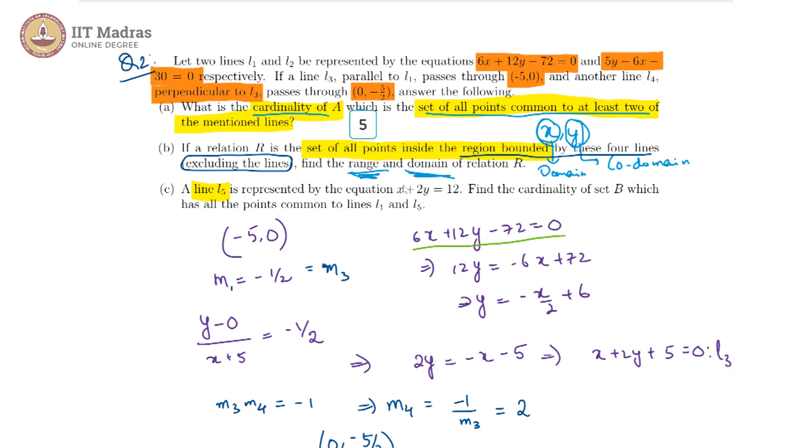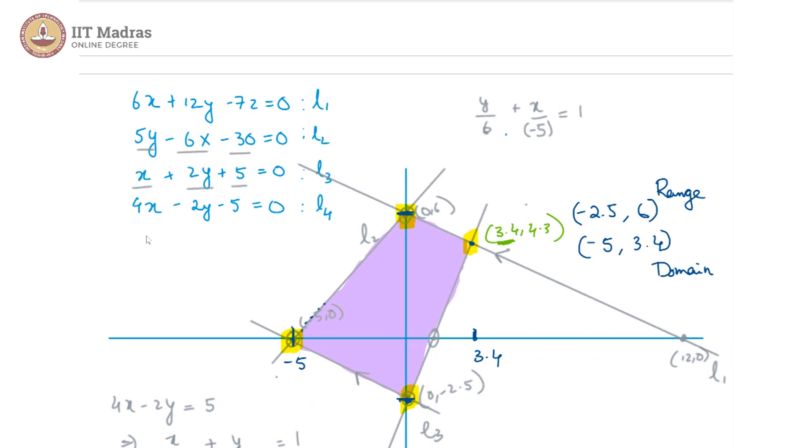Lastly, there is a line L5 represented by this equation is given to us. Find the cardinality of set B which has all the points common to L1 and L5. Now let us look at L1 and L5. L5 is given as x + 2y = 12. Now if we applied our intercept form again, we would get x/12 + y/6 = 1. Let us look at that: x/12 indicates x-intercept of 12, y/6 indicates y-intercept of 6. So we see that L5 is basically the same line as L1. Indeed, if you multiplied this whole equation with 6 you will just get the form of L1.